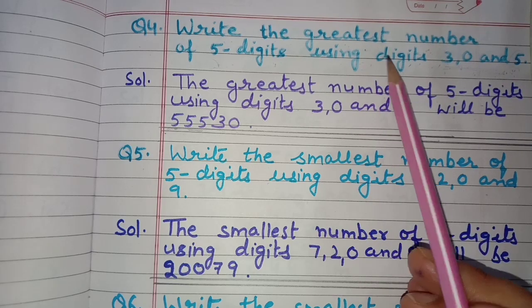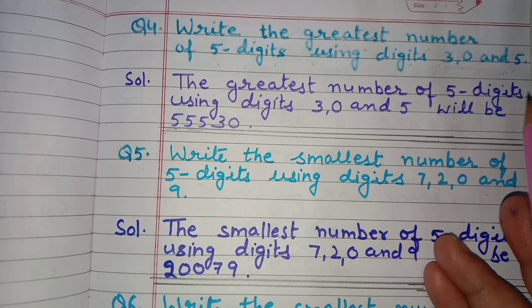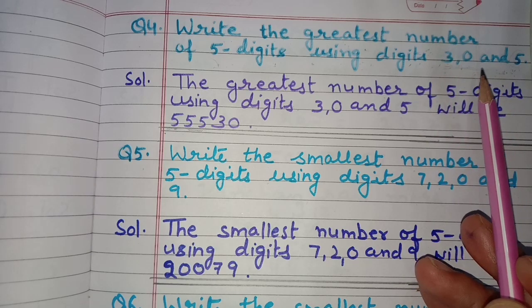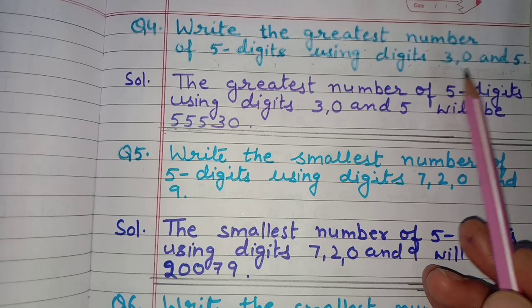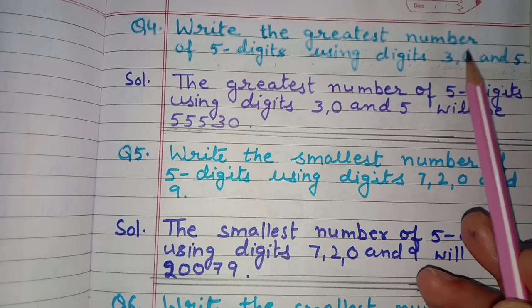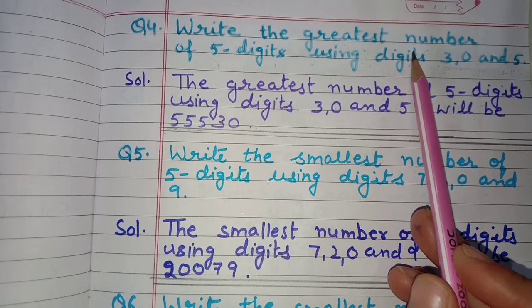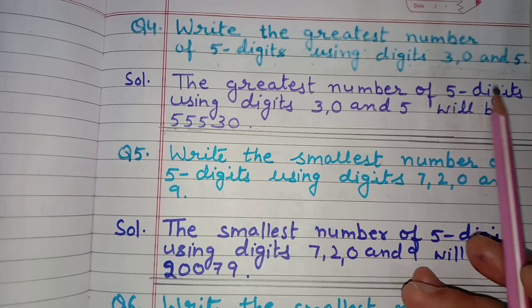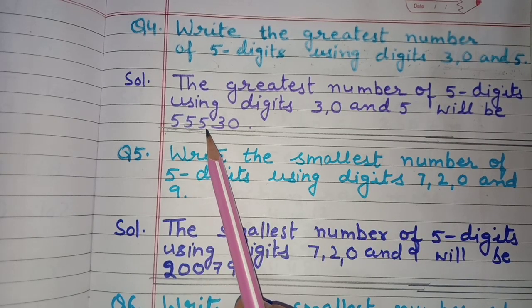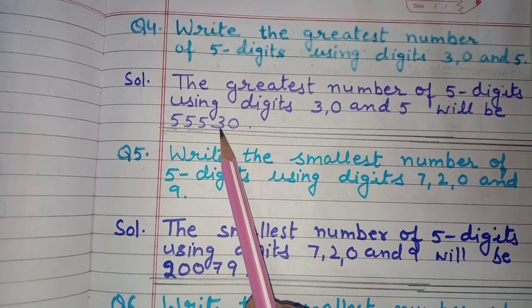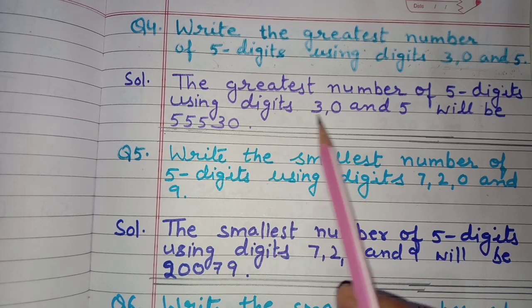Next is question number four: write the greatest number of 5 digits using digits 3, 0, and 5. We have 3 digits but need 5, so we repeat the greatest digit. The greatest digit is 5, so we write 5 three times. Then to form the greatest number, we arrange digits in decreasing order: 5, 5, 5, 3, 0. So 55,530 is the greatest 5-digit number using digits 3, 0, and 5.